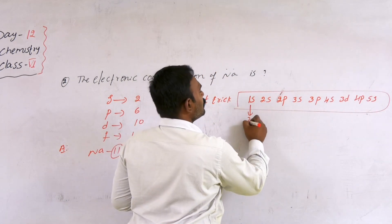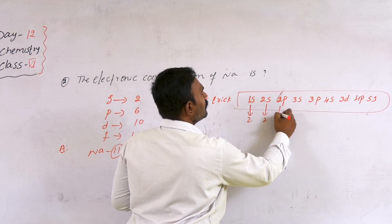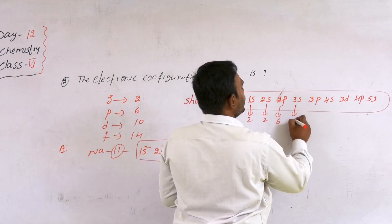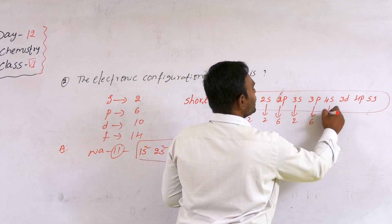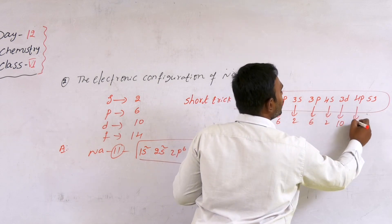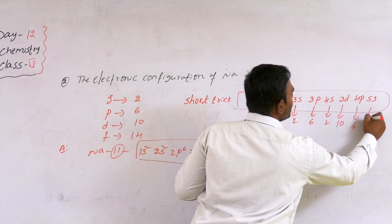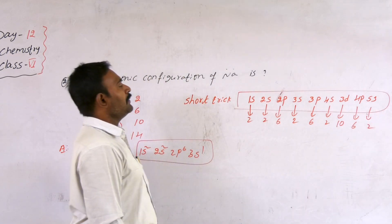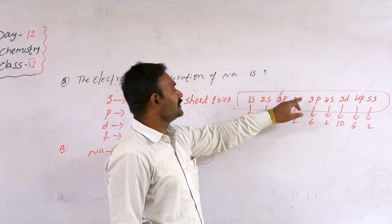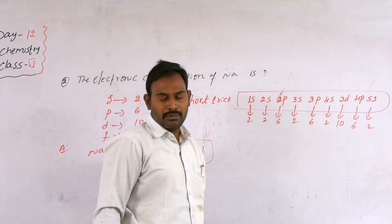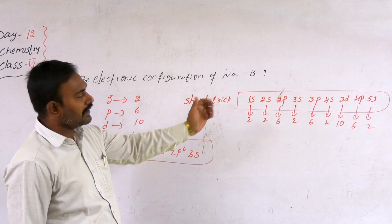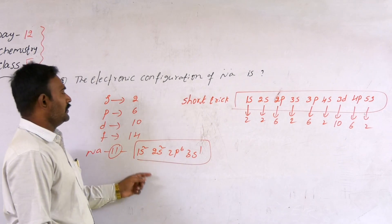The maximum electrons for each orbital in the sequence: p has 6, s has 2, p has 6, s has 2, d has 10, p has 6, s has 2. Using this trick, we can write the electronic configuration for elements up to atomic number 40 or 50.